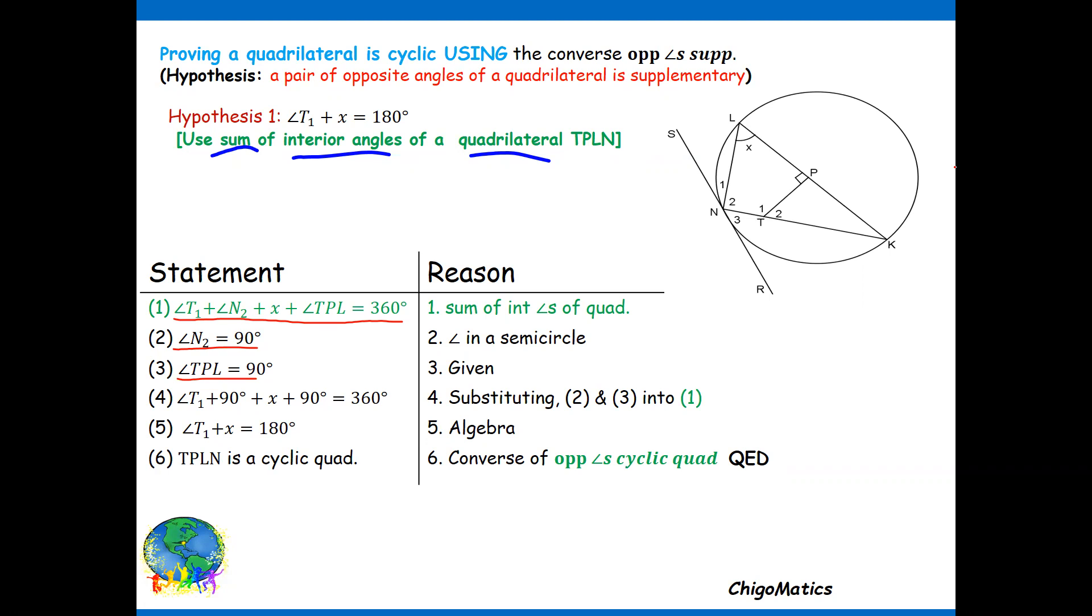Substituting to put the 90 and 90, when you add 90 plus 90 is 180, subtract from the right-hand side you get 180. And by so doing we have arrived at our hypothesis. Then we conclude that TPLN is a cyclic quad using the converse theorem.